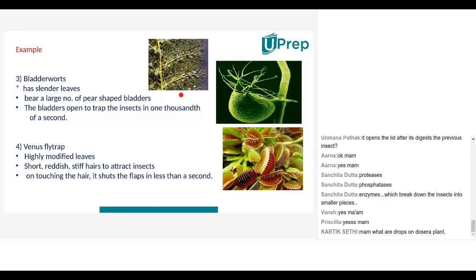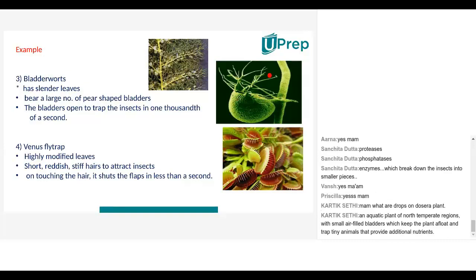Next we come to bladderwort. Just look at the leaves — they are extremely slender and thread-like. But notice these round, pear-shaped bladder structures. If you put one bladder under the microscope, it looks like a pear-shaped trap. The moment an insect comes near, the bladder opens its trap and engulfs the insect. Inside too, enzymes are present; they disintegrate the insect and the plant draws its nutrition. The bladder opens and closes its trap in one-thousandth of a second — that is how fast it works, like a trap door.